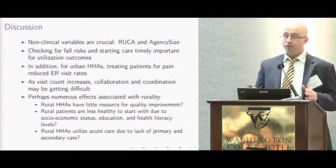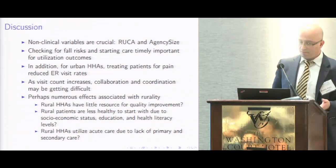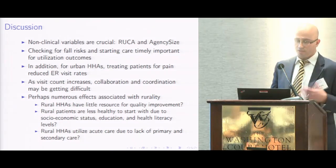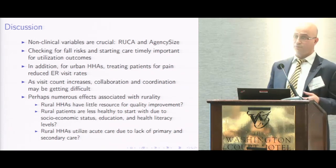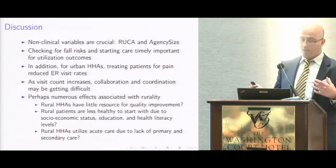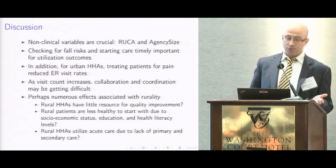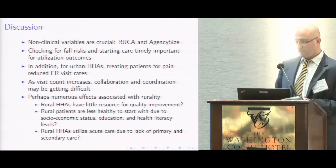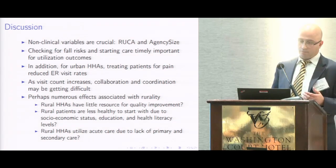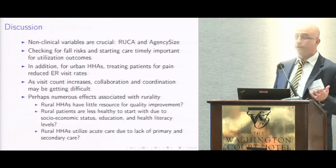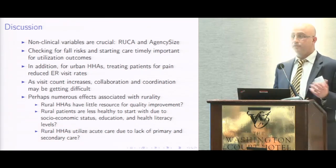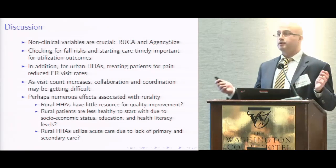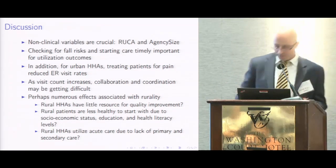As visit count increases, collaboration and coordination become more difficult. Why do we have higher rates for rural agencies? We can hypothesize: quality improvement may be difficult for those agencies, they could be small, patients may be less healthy to start with, there may be lower health literacy levels, or they have less access to primary and secondary care — so whenever there is a problem, they may just go to the hospital or emergency room.